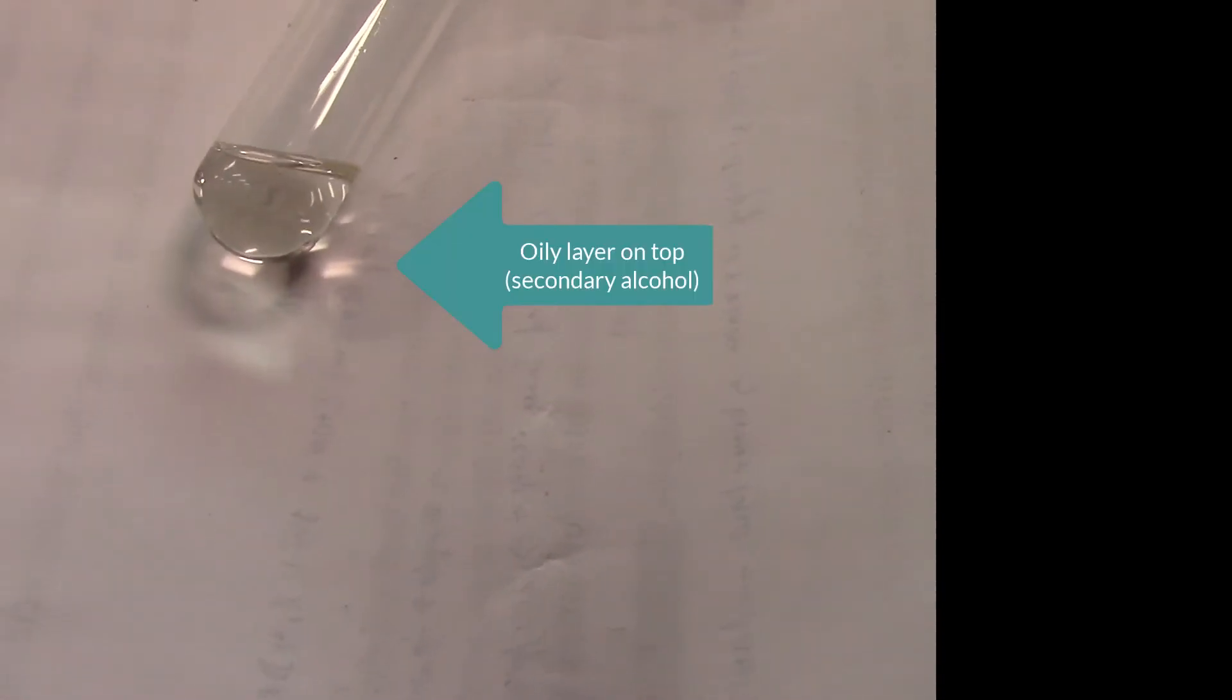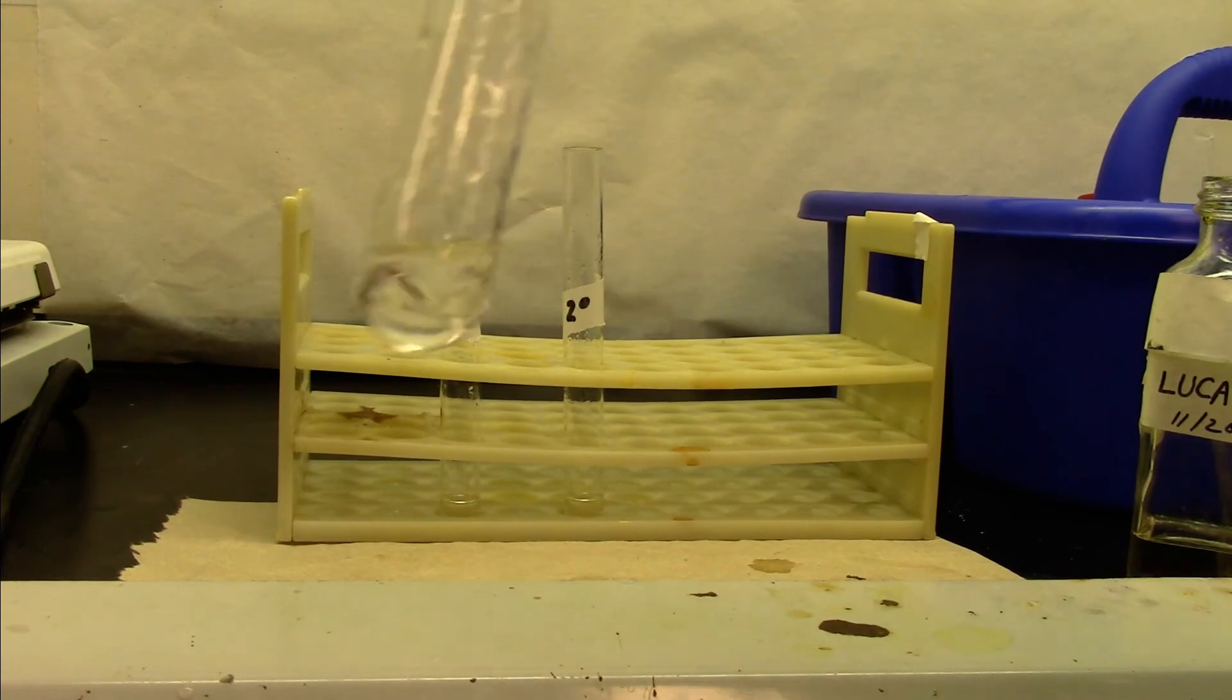It does have an oily layer. This is the secondary. It's been about a few minutes. When you give it a mix, it forms an oily layer on the glass wall. The primary has no reaction.